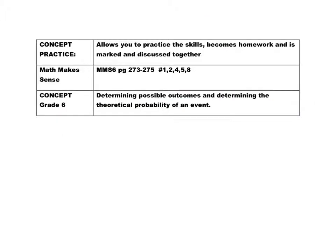Now you're moving on to your concept practice: pages 273 and 275, numbers 1, 2, 4, 5, and 8. You are working on determining the possible outcomes, how many are possible, and from that, determining the theoretical probability of an event. Remember, if you have questions as you're working, let me know. Remember to communicate your theoretical probability in fraction form.